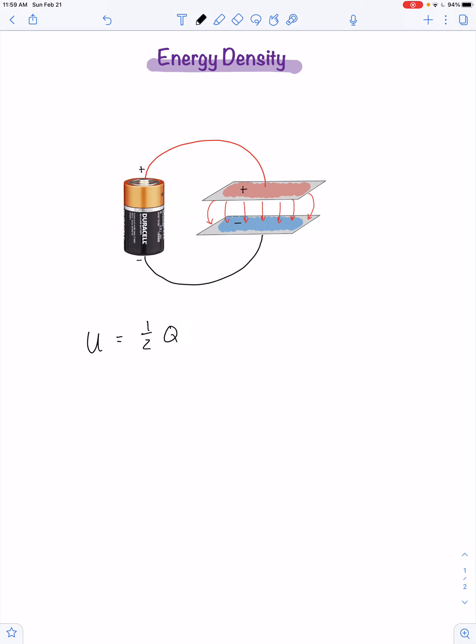It's one-half times the charge that develops on the positive plate multiplied by the voltage of the battery, or it's one-half times the capacitance multiplied by the voltage of the battery squared, or it's the amount of charge that develops on the positive plate squared divided by two times the capacitance.